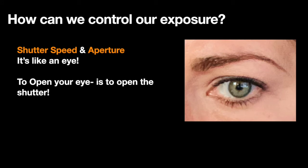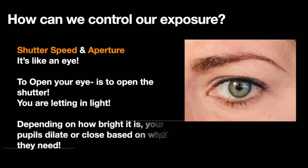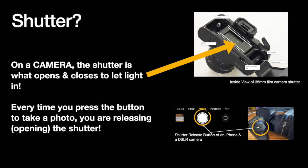When you close your eye, no more light comes in. If you're letting in light in a dark space, your pupils are going to dilate — they open up because they need more light to see. In a bright space, your pupils close down because they don't need as much light. On a camera — because a camera is a box with a hole in it — the shutter is what opens and closes to let that light through.